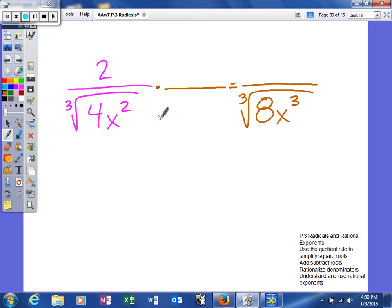So to do this, I'm going to multiply the top and the bottom. To multiply 4 by something to give me 8, that something's 2. And x squared times something to give me x cubed is x. So I'm going to multiply the top and the bottom by the cube root of 2x.